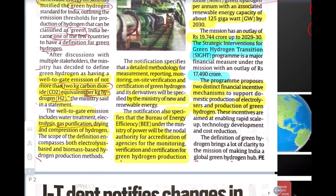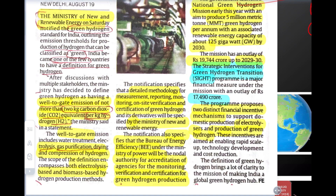Next, there are two projects coming up in India. The first is the SIGHT project — Strategic Intervention for Green Hydrogen Transition. India has allocated 19,744 crore rupees from 2019 to 2030. The goal is to achieve 120 gigawatt renewable energy capacity in India.